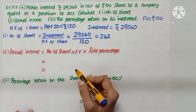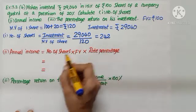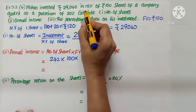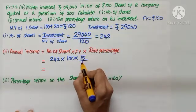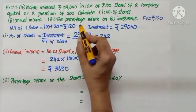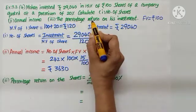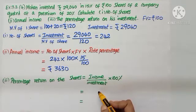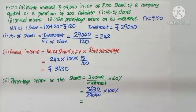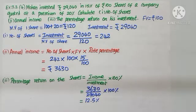Second question: annual income. Annual income equals number of shares (242) into face value (Rs. 100) into rate percentage (15%), so 15 by 100. We get Rs. 3,630. For percentage return, the formula is income by investment into 100: 3,630 by 29,040 into 100. We get 12.5%. So percentage return on the shares is 12.5%.